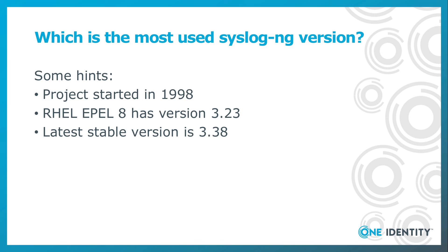I end the second part of my SyslogNG tutorial with a tricky question. Which do you think is the most widely used SyslogNG version? Let me give you some hints. The SyslogNG project started in 1998. Red Hat Enterprise Linux 8, the most popular platform for SyslogNG servers, has SyslogNG version 3.23. The latest stable version right now is 3.38. You can answer my question in a comment on my blog or on YouTube, or you can also post on Twitter or Mastodon.